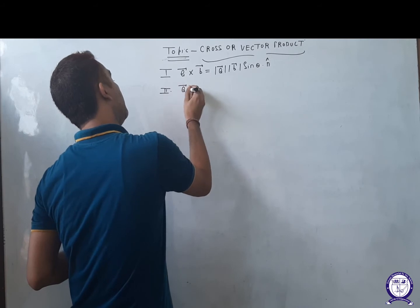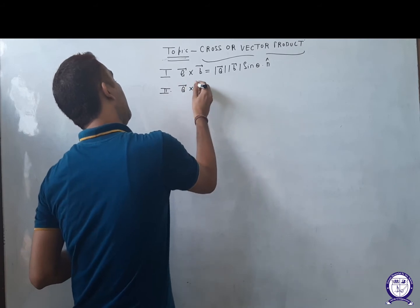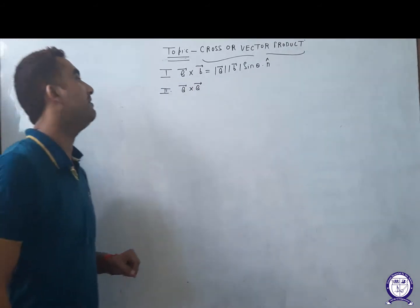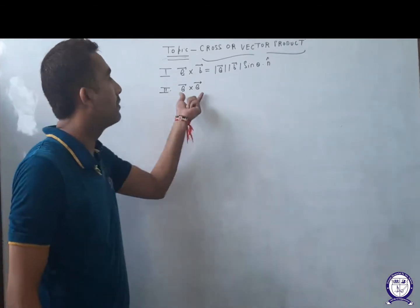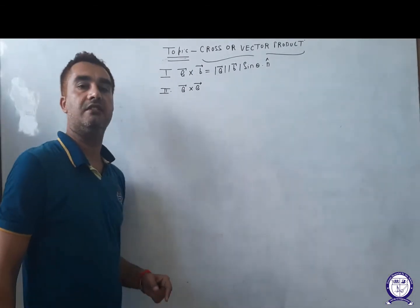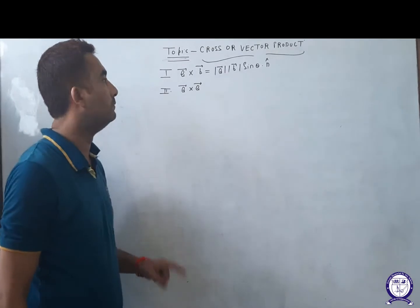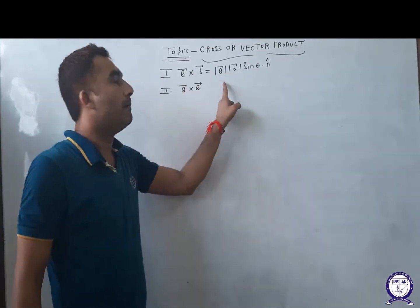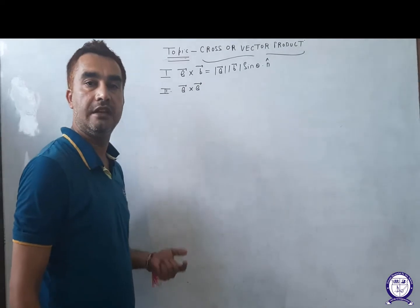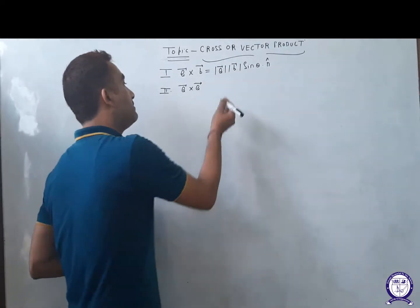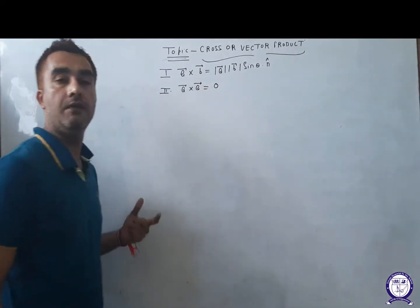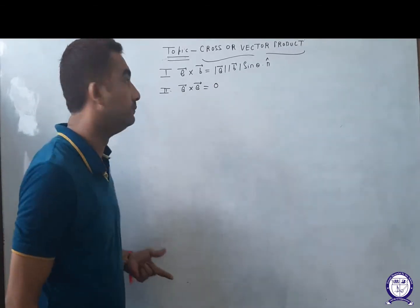If vectors are the same, then what will be their CROSS Product? The angle between same vectors is zero, that means magnitude of A times sine zero — sine zero becomes zero — that means the CROSS of two same vectors is always zero.